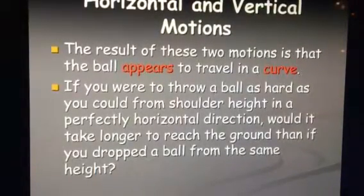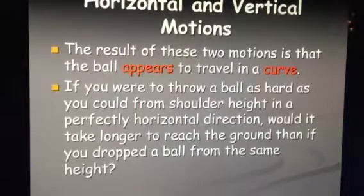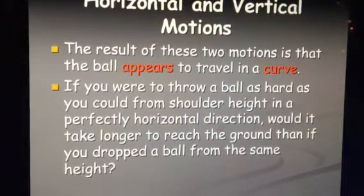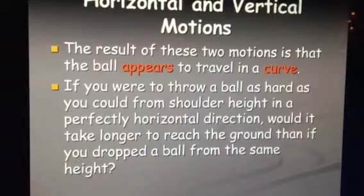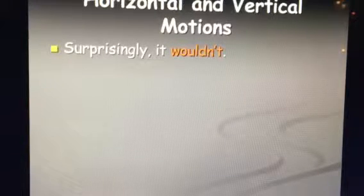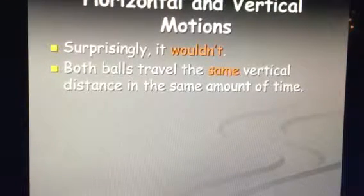Here's a question: if you were to throw a ball as hard as you can from your shoulder height in a perfect horizontal direction, would it take longer to reach the ground than if you dropped the ball from the same height? If I pitch it at 100 miles an hour, would it take the same time to reach the ground as if I just held my hand out and dropped it? Surprisingly, both balls would travel the same vertical distance in the same amount of time.